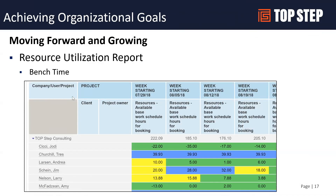Looking at bench time: there is a value called available schedule hours for bookings. Assuming people have a work schedule of 40 hours and they're booked for 25 hours, this value would return 15 hours available to be booked — showing how much availability or bench hours you have moving forward. If someone is overscheduled beyond 40 hours, you'll see a negative number. For example, Andrea has 10 available hours for bookings the week of July 29th, five the next week, and so on. A good way to see capacity across your team.